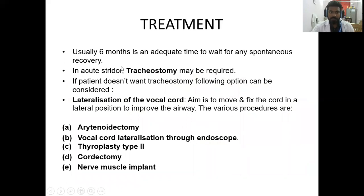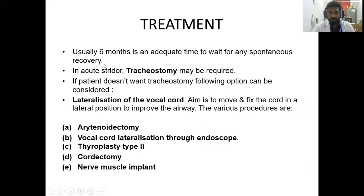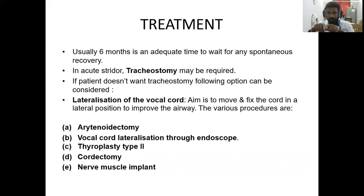The treatment for bilateral abductor palsy: usually six months is an adequate time to wait for spontaneous recovery. In acute stridor, if the patient comes to the emergency, do a tracheostomy to maintain the airway. If the patient does not want a tracheostomy, the following option can be considered — surgeries on the vocal cord, called lateralization of the vocal cord. Since both cords are in the median or paramedian position, you lateralize the cord to create airspace so the patient can breathe easily.